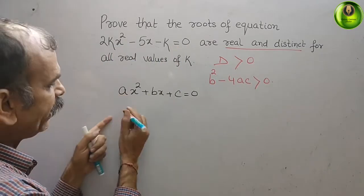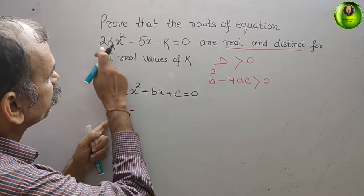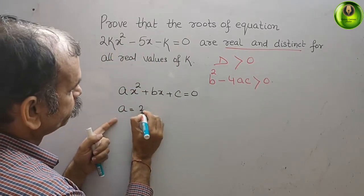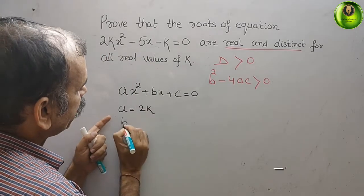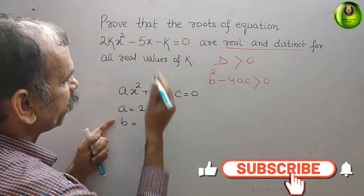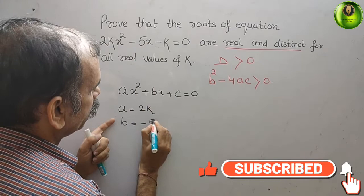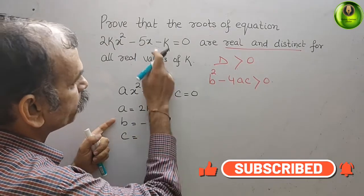So you can see a is nothing but 2k, and b is -5, and c is -k.